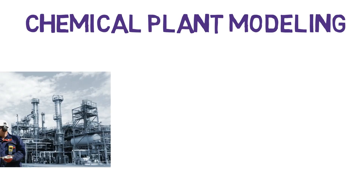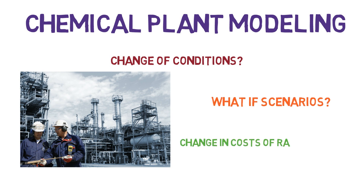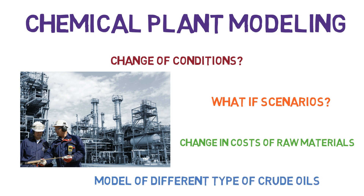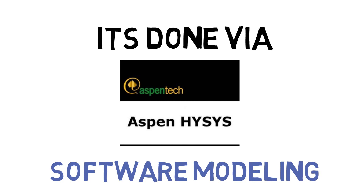Have you ever wondered how chemical engineers model chemical processes and chemical plants? What-if scenarios — what will happen if we change the temperature of a process, the type of unit operations, the cost of raw materials, or the type of crude oil? If your guess is actually making those changes in the chemical plant, well, you're wrong. It's done via software modeling, specifically Aspen HYSYS.